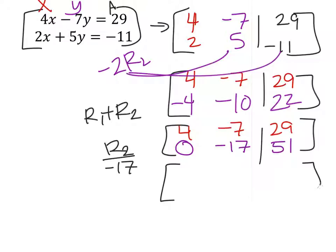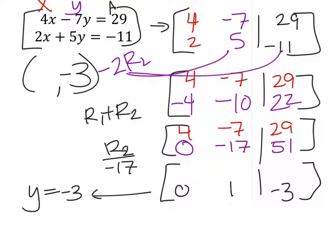After this is done, this gives me a 0, a 1, and 51 divided by negative 17. That's going to give me a negative 3 here. So, from this equation, we would have y equals negative 3. That's the first part of our answer here, negative 3.